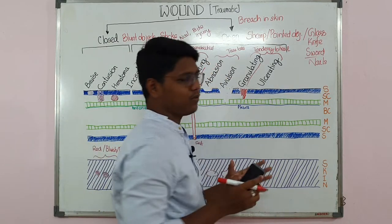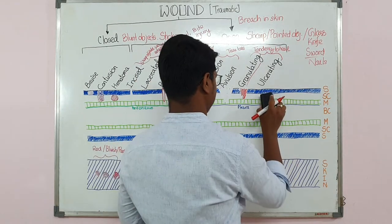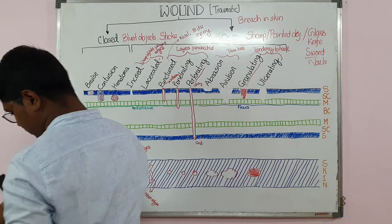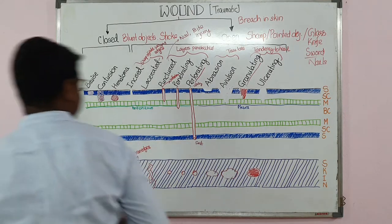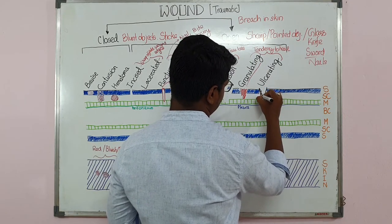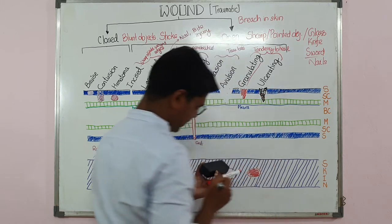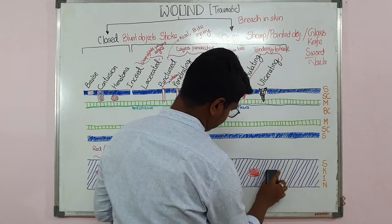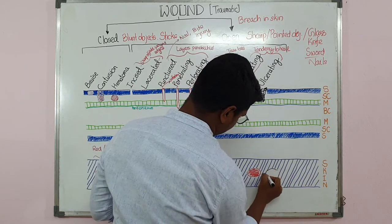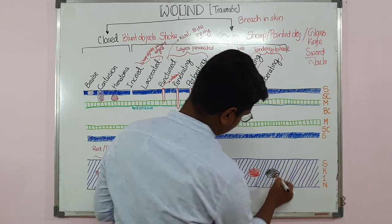The ulcerating wound does not have any tendency to heal — you can call it a chronic wound. The color of the ulcerating wound is usually black, and you may find dead or necrotic tissues. From above it looks similar to a granulating wound, but the color is blackish or whitish due to dead and necrotic tissues.